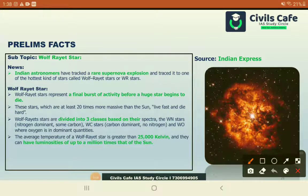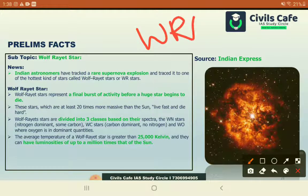Indian astronomers have observed a supernova explosion and called it the WR star, or Wolf-Rayet star. A supernova explosion is very rare because it is the final burst activity of a huge star before it dies. Indian astronomers were able to observe and identify it.